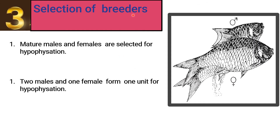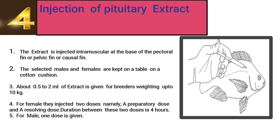Third, selection of breeders: before injecting the pituitary extract, you must select the fish or breeders for hypophysation. The breeders selected should be mature male and female fishes. Two males and one female form one unit for hypophysation.